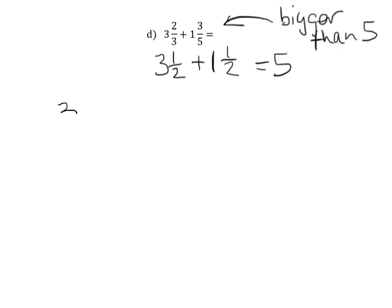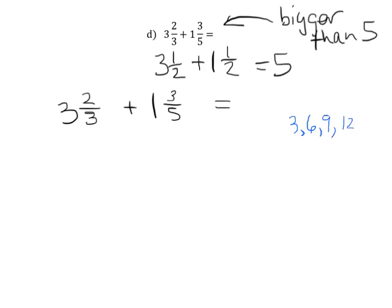So now we're going to rewrite that problem down here. 3 and 2/3, and I'm going to leave a little bit of a gap. And then 1 and 3/5, and I'm going to leave a little bit of a gap. First thing we need to do is find that common denominator for 3 and 5, since our denominators are different. One way to do it is to do your little skip counting: 3, 6, 9, 12, 15. And automatically we can stop because we know our skip counting for 5 is 5, 10, 15. So there's our common denominator — it's going to be 15.